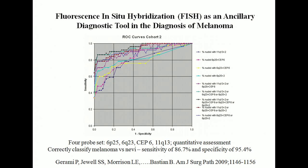This prompted Dr. Bastian to see if he could bring this into the clinic. Obviously there were a lot of variations in gains and losses, and it wasn't clear which ones were most important. So they did a number of studies gathering cases of melanoma and nevi and applied this technology using FISH probes, because it's much more cost-effective and easy. They selected regions and used various combinations to see which were most informative in separating melanoma from nevi, ultimately finding a four-probe set.